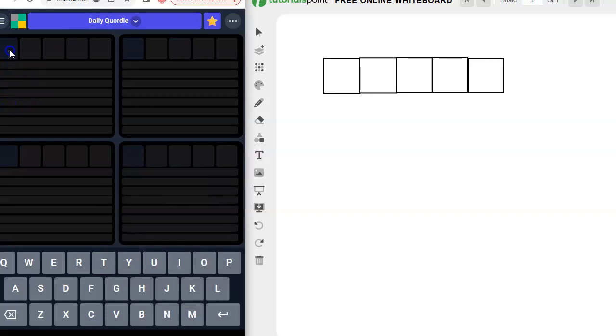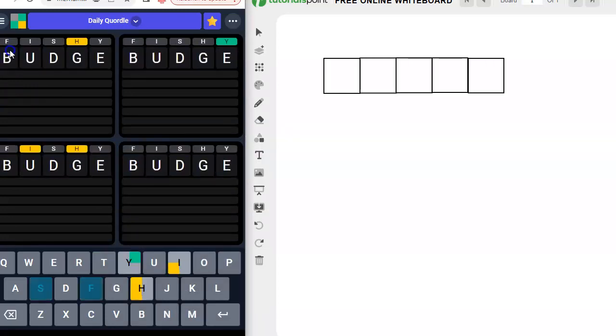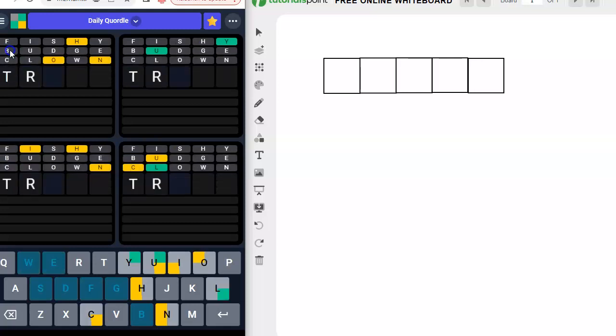Alright, so I'm going to try my quartal now. I'm going to put in my four standard words. Fishy, budge, clown, tramp.